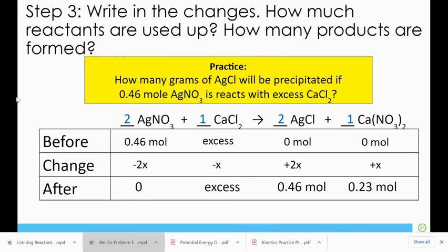So silver nitrate is going to be all used up and turned into products. Therefore, afterwards, we will have zero. Calcium chloride, we're still going to have some left over because it's in excess. We will produce 2x of silver chloride. Remember, we already solved for x. x is a value that maintains throughout the problem. So 2x is 0.46. 1x is 0.23. This is what we're going to have in our container when everything's said and done.